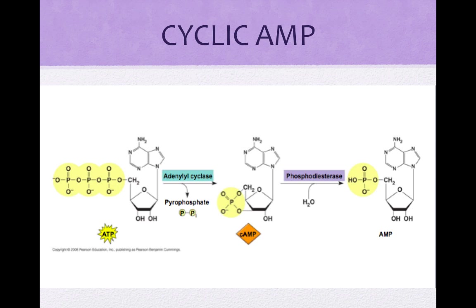Certain small molecules and ions are key components of signaling pathways. Some signal pathways use non-protein molecules or ions called second messengers, which spread rapidly through the cell. For example, cyclic AMP carries signals from the plasma membrane of liver or muscle cells initiated by epinephrine, resulting in glycogen breakdown in the cell. Two second messengers commonly used are cyclic AMP and calcium ions.